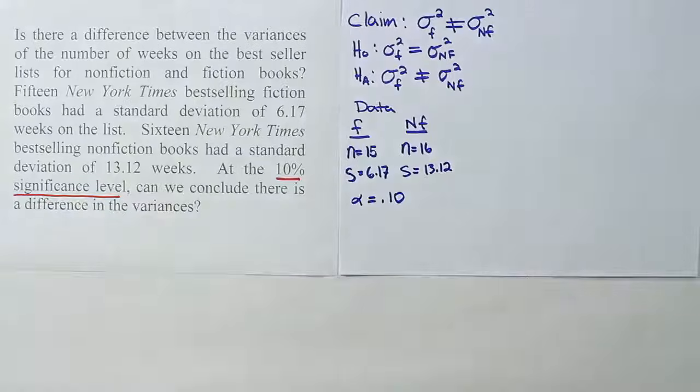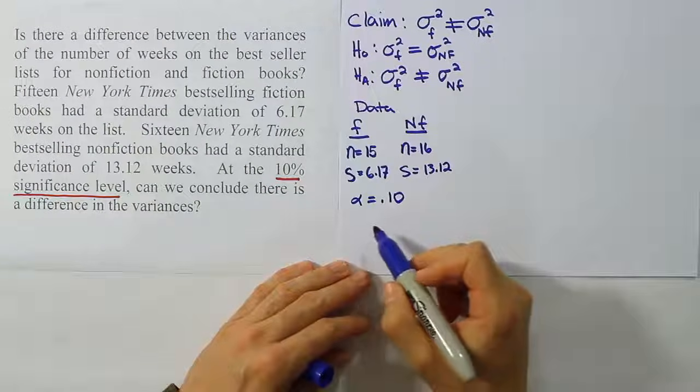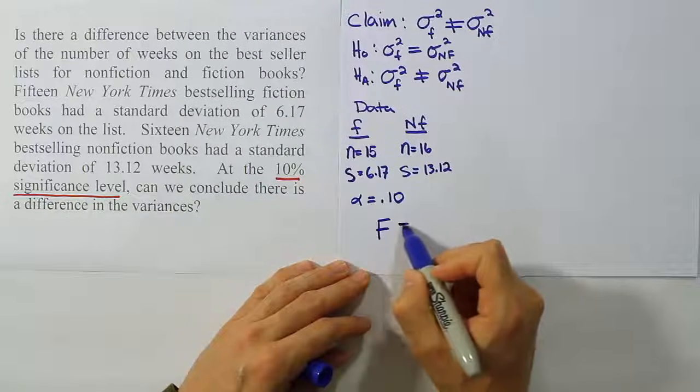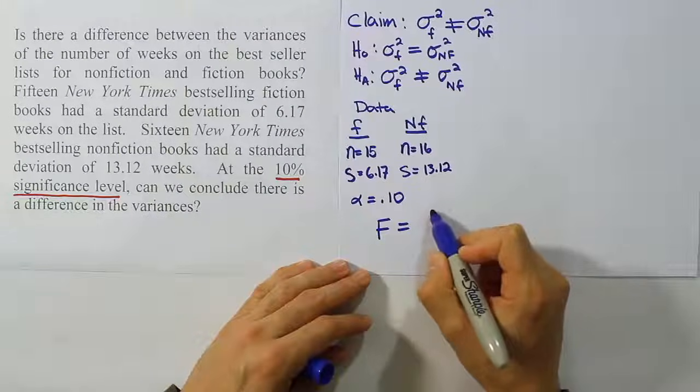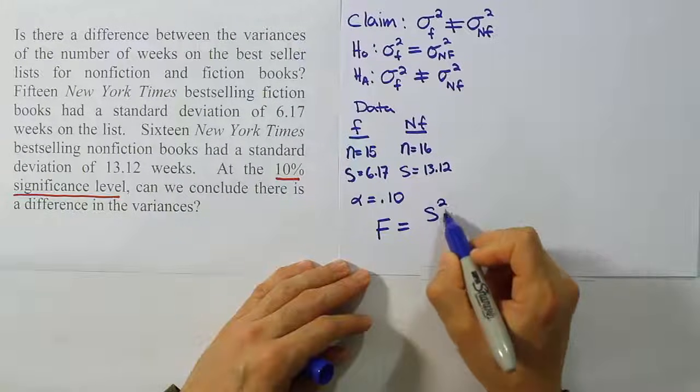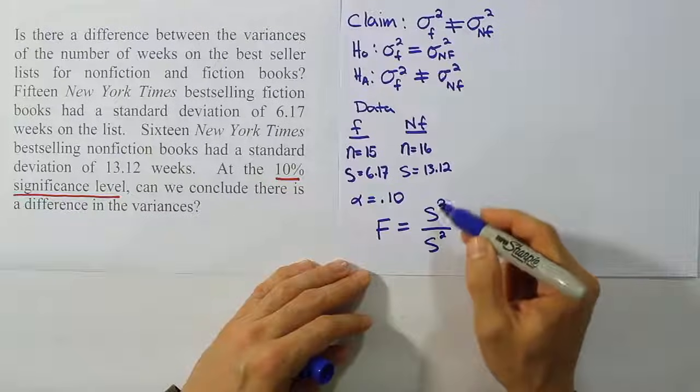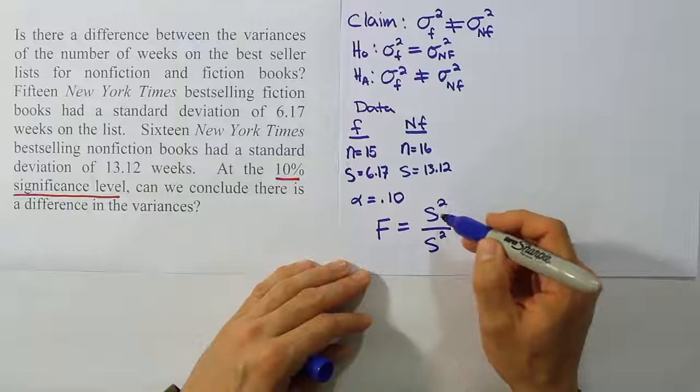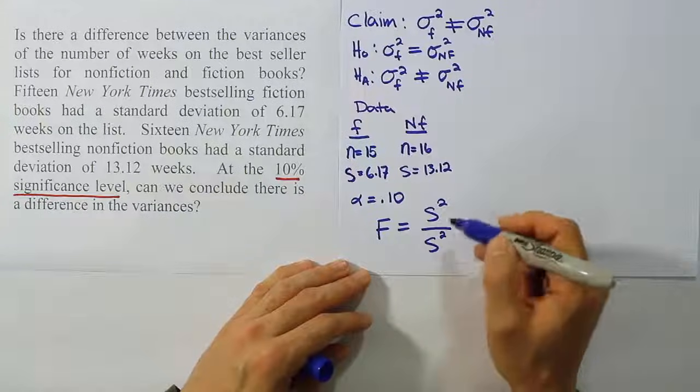Now our next step in the problem is to identify the test statistic. The test statistic is going to be a simple formula. It's going to be an F test statistic. And the formula is actually very nice. What we do is we put the ratio of two standard deviations squared. In other words, two sample variances are going to be squared. I mean, sorry, not squared. Two sample variances put in a fraction to form a ratio, or two standard deviations squared, which is the same as variances put in a fraction to form a ratio.